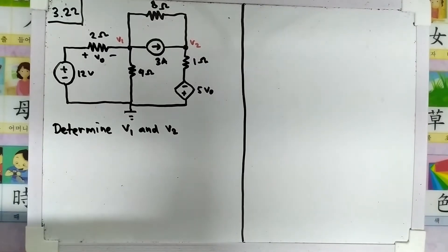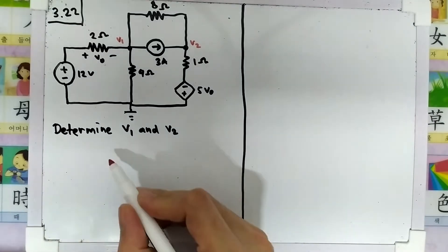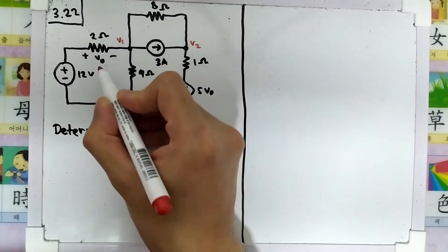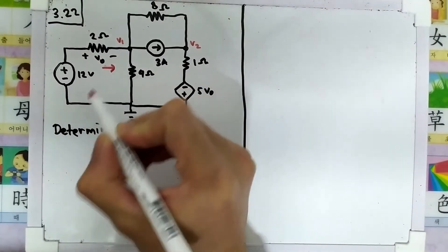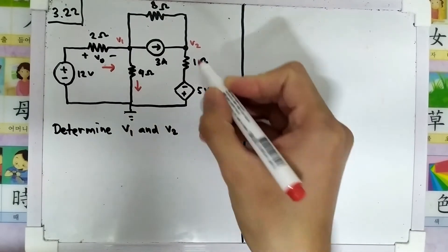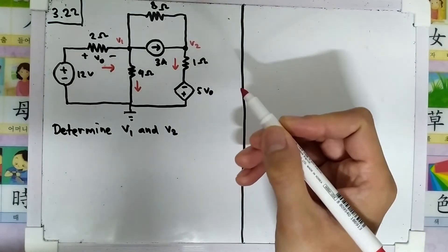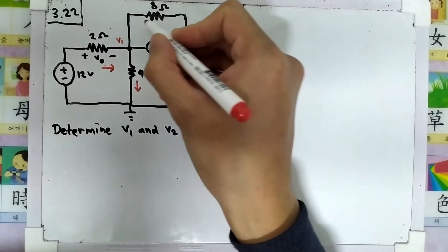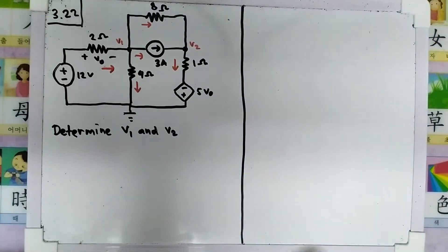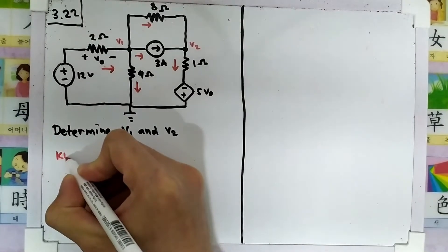We will take a look at problem 3.22 from Sadiku. The question is to determine v1 and v2. I will assume that this current here is going to the right side, this current here is going to the downside, here also to the downside, this one is to the right side, and this one is obviously to the right side. We will start at v1 using KCL.